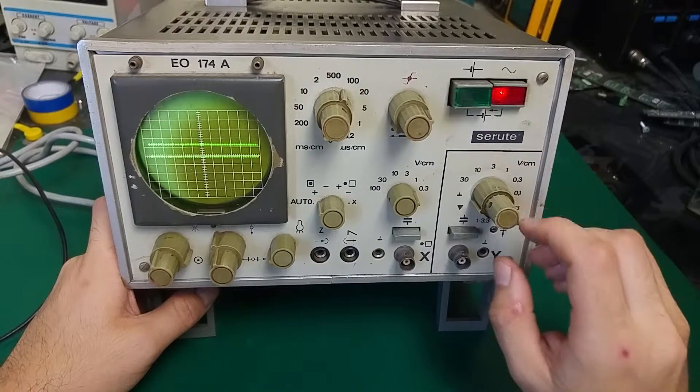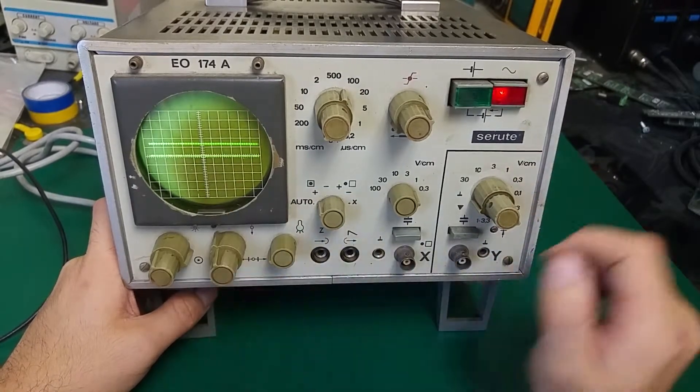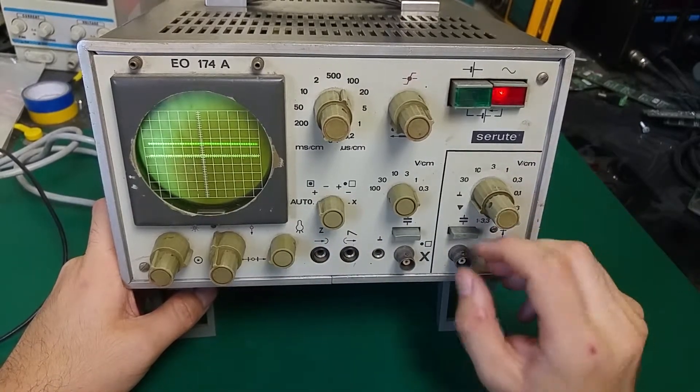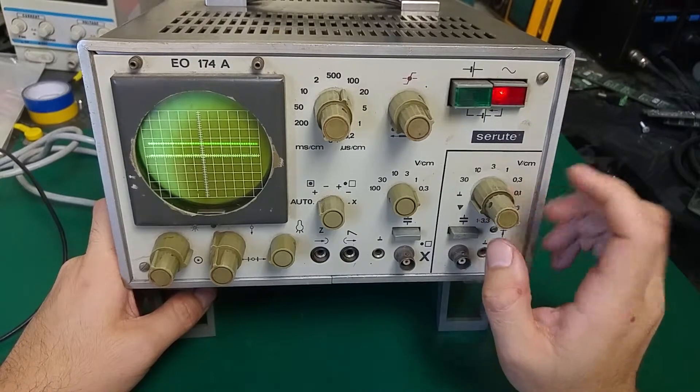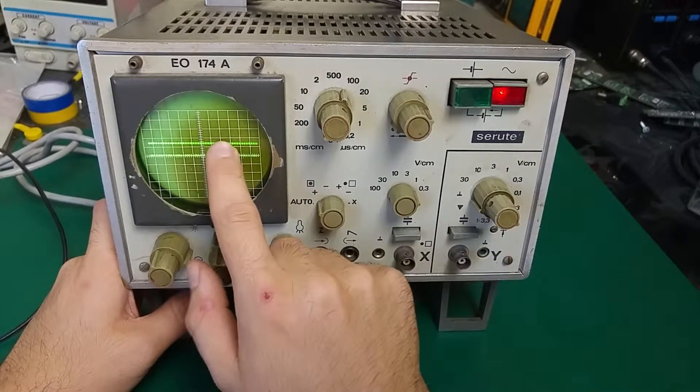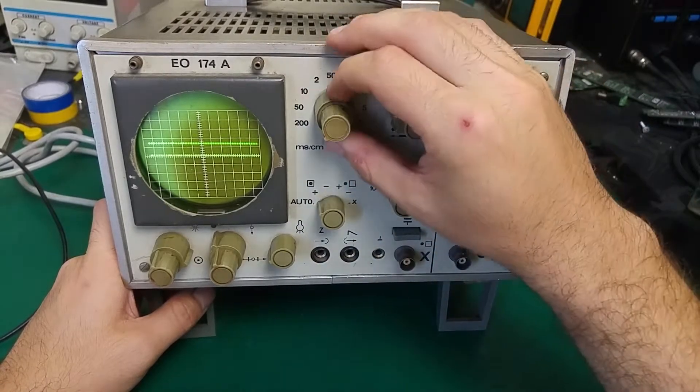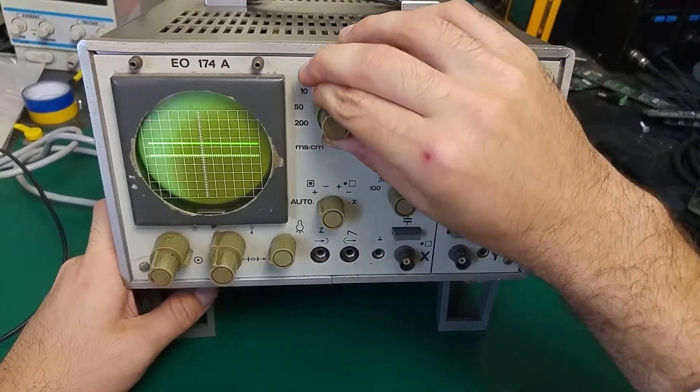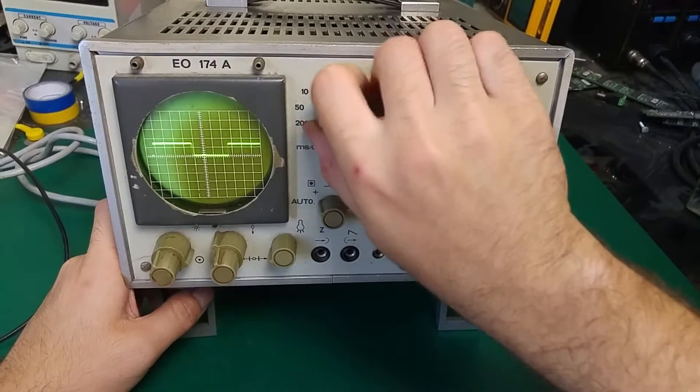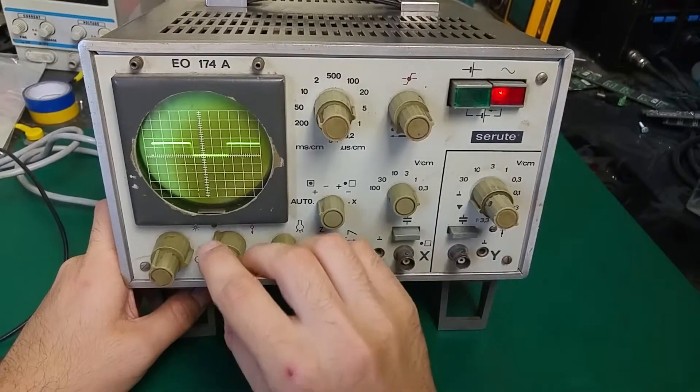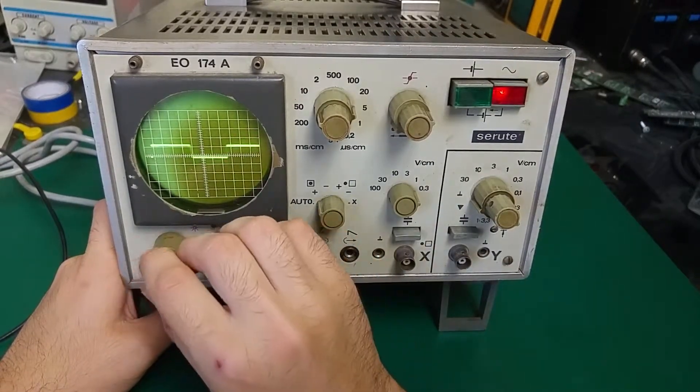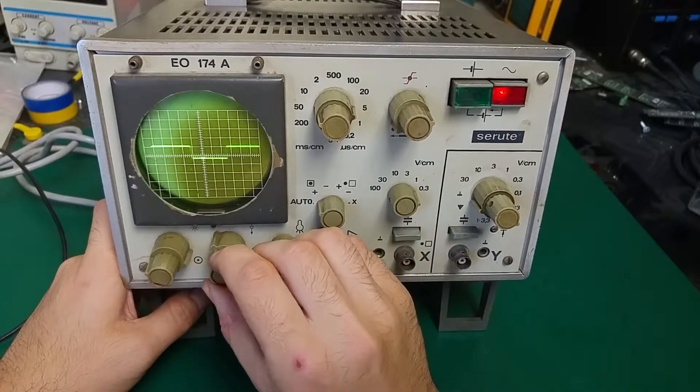And we've got some kind of signal. Let's check the voltage - it's quite good. We've got one division. Let's change the time base in that direction, and we've got our measurement.